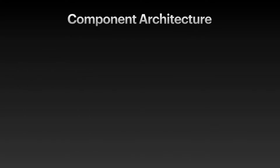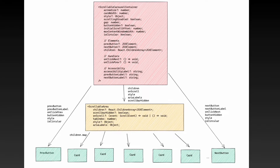So let's start with the component architecture. Here's what I envision. There will be a scrollable carousel container, which contains the left button, right button, and a scrollable area. The scrollable area will have a list of cards.